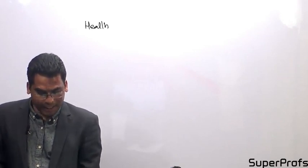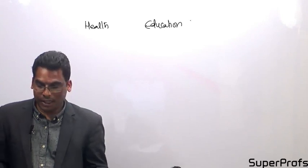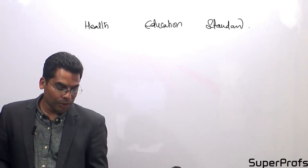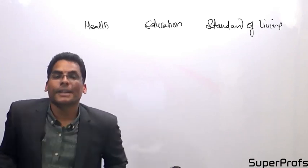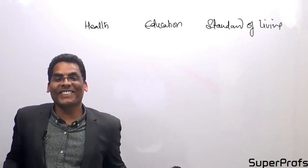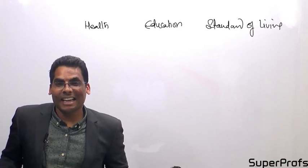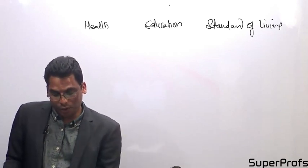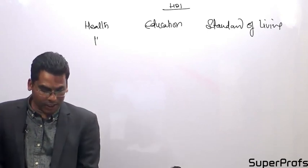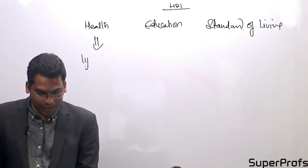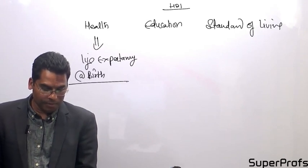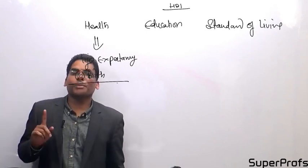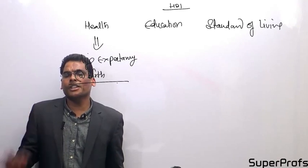The Human Development Index talks about three dimensions: health, education, and standard of living. Under health, the measure used is life expectancy at birth. Life expectancy at birth captures all health-related infrastructure, health facilities, and health conditions — everything is captured in this single indicator.